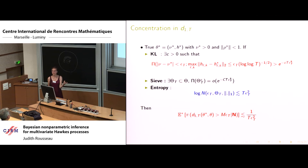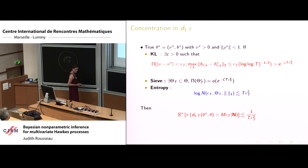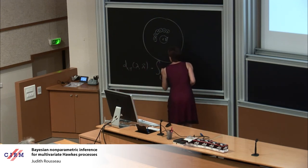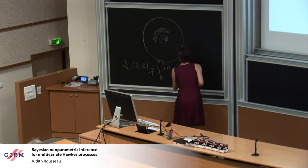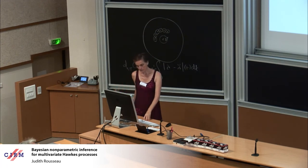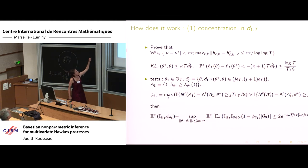If you have these two types of conditions — the entropy condition replacing the testing condition and the L2 prior mass condition replacing the Kullback-Leibler condition — then you have epsilon_T as a posterior concentration rate for the D1T distance. The D1T distance is the L1 norm between two intensity functions divided by T — a stochastic distance. It's not fully explicit in terms of parameters because it depends on the observations. We had to adapt the techniques from Ghosal-van der Vaart to handle stochastic distances.